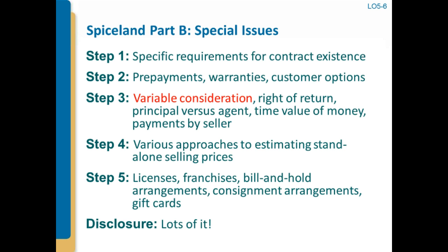Step three is estimating transaction price. We're going to be focusing on variable consideration — highlighted in red. But it also involves rights of return, principal versus agent, time value of money, and payments by the seller. Step four is where we have to allocate based on standalone selling prices. If they're not observable, you have to estimate them. So we deal with that.